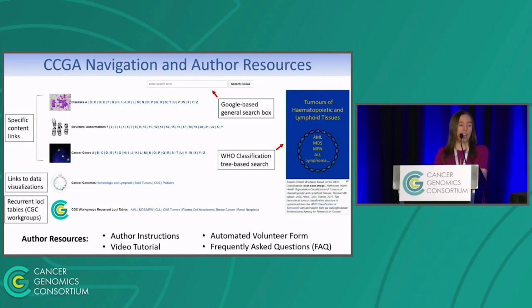There are a number of ways to navigate, but I'm just going to point out the image of the blue book on the side, where you can click on that and actually get the classification tree from that book and find your entity that way.